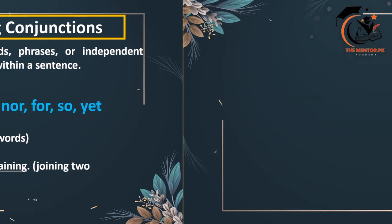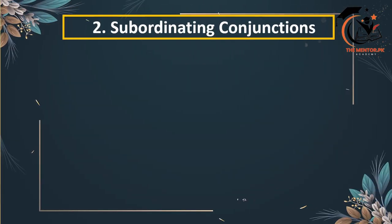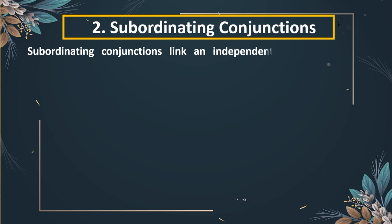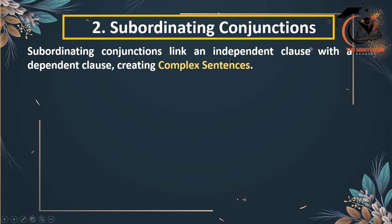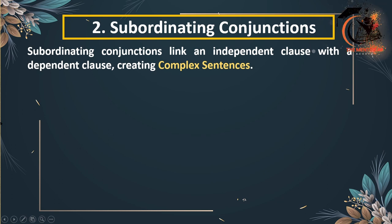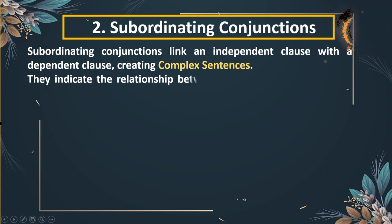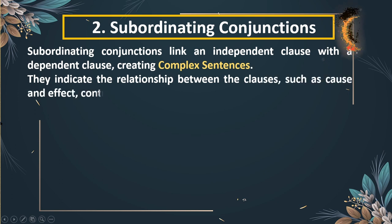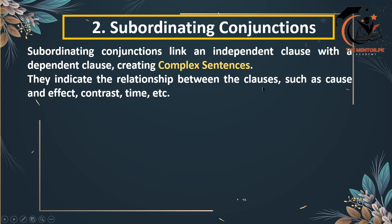The second type is subordinating conjunctions. These conjunctions link an independent clause with a dependent clause, and therefore they create complex sentences. Subordinating conjunctions indicate relationships between the clauses. These relationships could be cause and effect, contrast and time, etc.